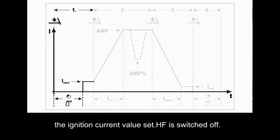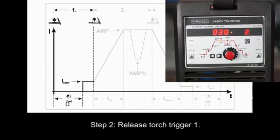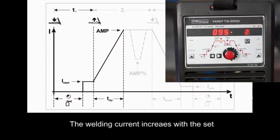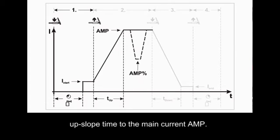HF is switched off. Step 2. Release torch trigger 1. The welding current increases with set upslope time to the mean current.